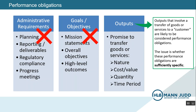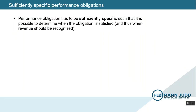Having identified performance obligations within a contract, the next step is to determine whether those performance obligations are sufficiently specific. When trying to figure out whether a performance obligation is sufficiently specific, one thing that is helpful to keep in mind is the five-step model for revenue recognition under AASB 15. The five-step model includes the requirement to identify performance obligations, allocate the transaction price to those performance obligations, and then recognize revenue as performance obligations are satisfied. If you're not able to perform those steps — for example, if it's not possible to ascertain when a performance obligation is satisfied — then the likelihood is that the performance obligation is not sufficiently specific.